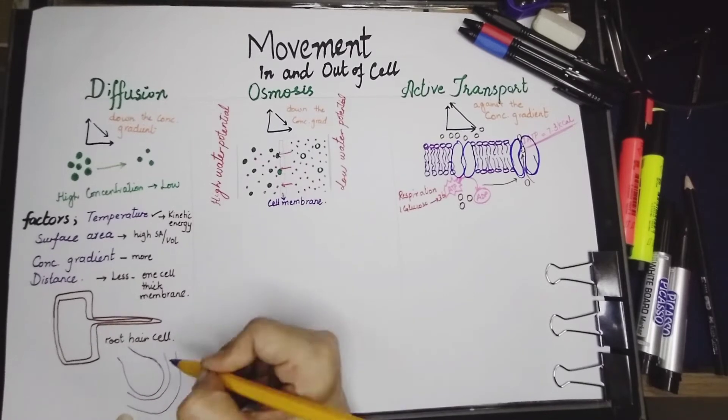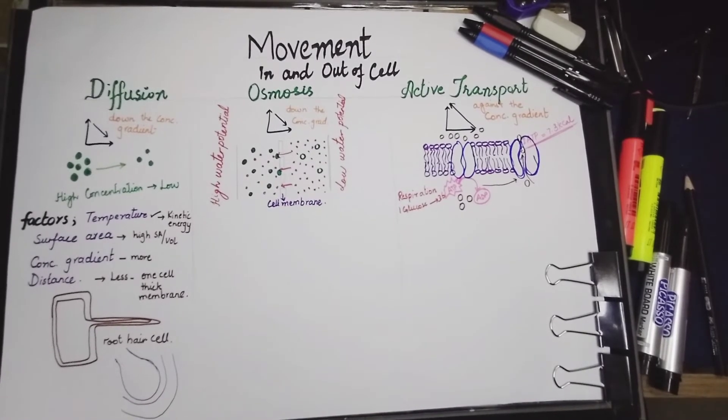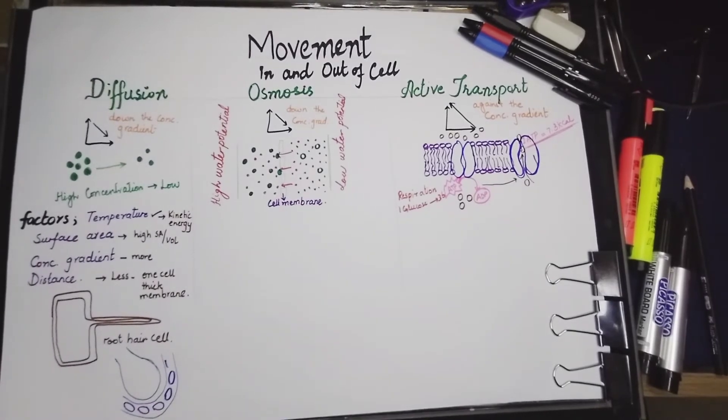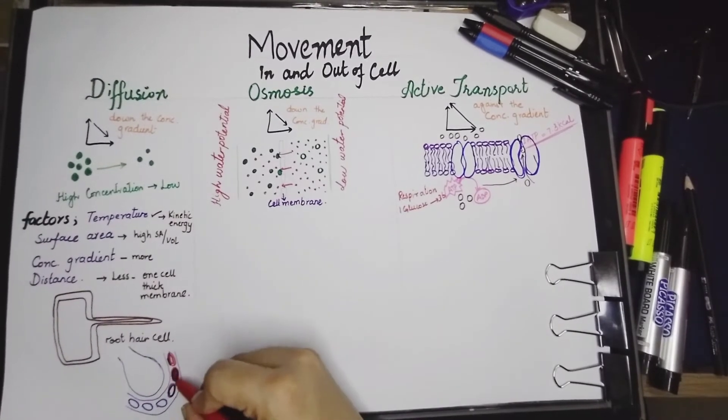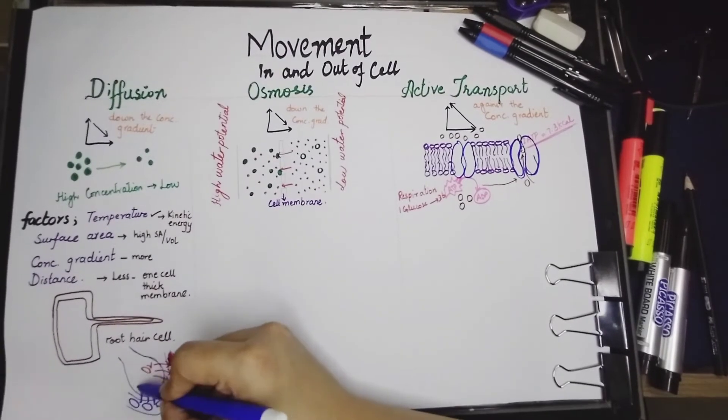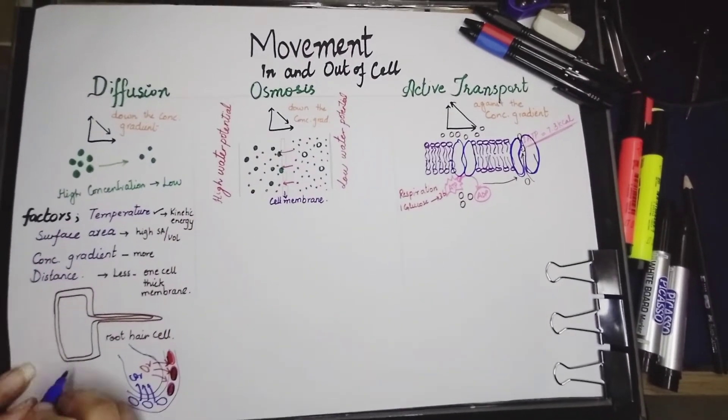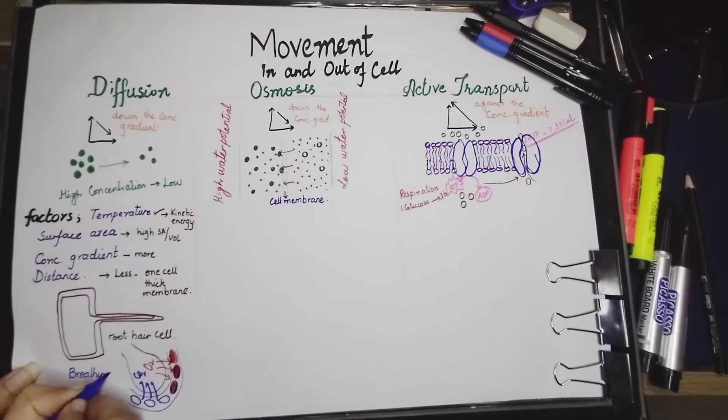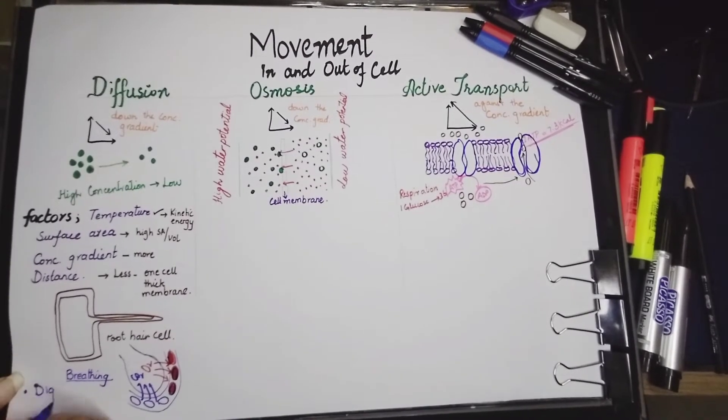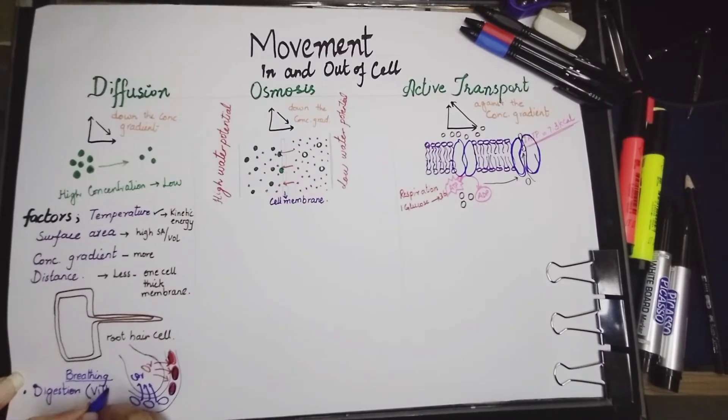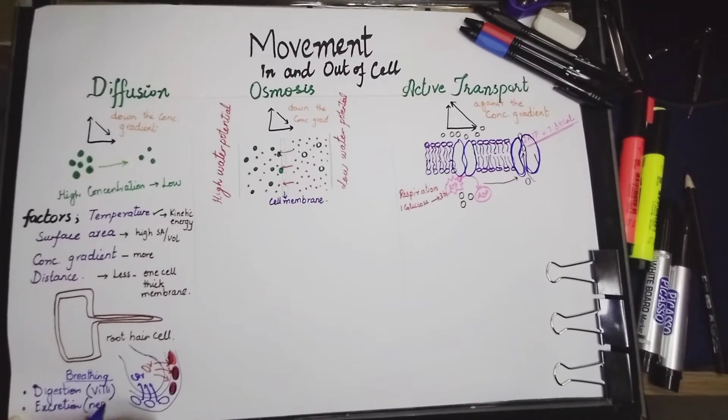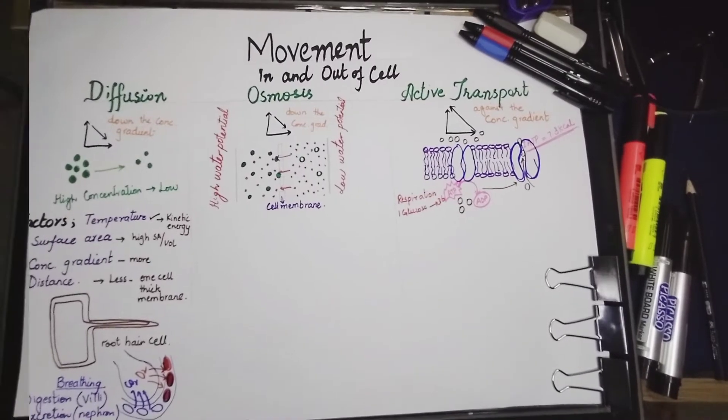There is another example of diffusion in our respiratory system. We can say alveoli is the perfectly explained example of diffusion in which alveoli is surrounded by a capillary. The blood capillary exchanges carbon dioxide and oxygen by simple diffusion. Carbon dioxide is diffused out whereas oxygen is diffused in. So this is again a very explanatory example of diffusion.